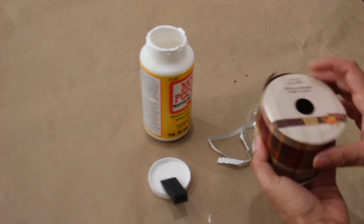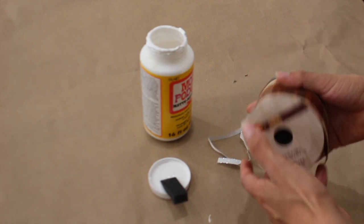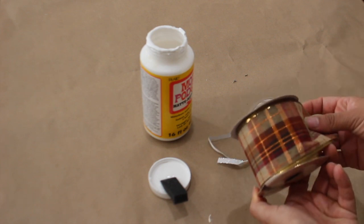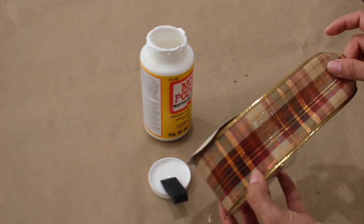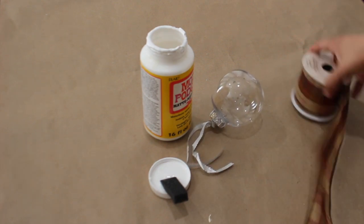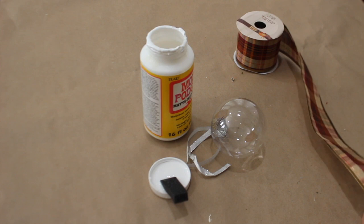I want to Mod Podge this Dollar Tree ribbon. Now as you can see, this was actually for fall, but I really like it for Christmas. I love the burgundy and gold color. I'm going to cut it in half and start Mod Podging it in strips like that.